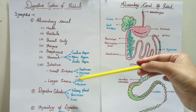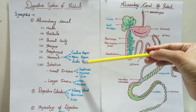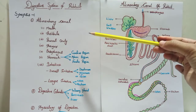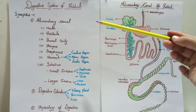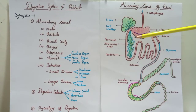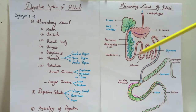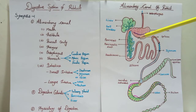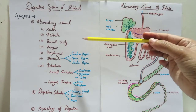There are seven parts in the alimentary canal: mouth, vestibule, buccal cavity, pharynx, esophagus, stomach, and intestine. In the intestine there are two parts — small intestine and large intestine. All the parts of the alimentary canal are similar to other animals. The mouth is a wide slit-like structure and opening covered with the lips.